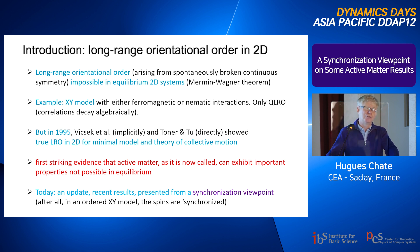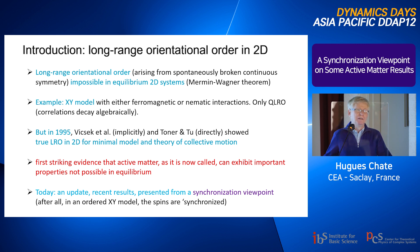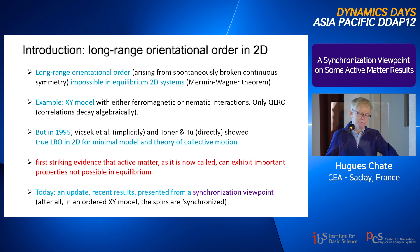In 1995, Tamas Vicsek and collaborators, and Toner and Tu, showed that when spins are forced to move at constant speed — the Vicsek model — moving in the direction given by their magnetic orientation, you can have and do have true long-range orientational order: correlations do not decay to zero at infinity but go to some asymptotic constant in an ordered phase. This is in apparent contradiction with the Mermin-Wagner theorem, because many conditions required by that theorem are not met due to the non-equilibrium nature of the system.